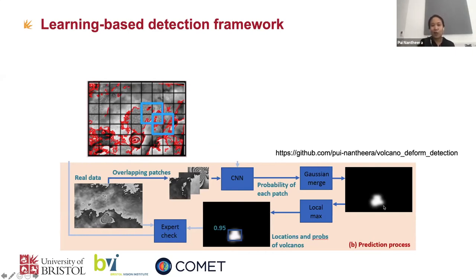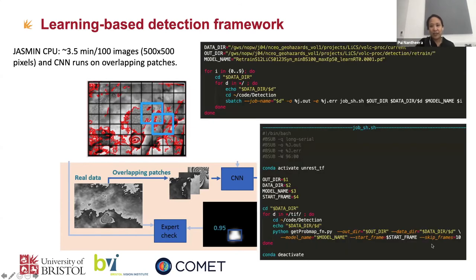I started developing the model in MATLAB, and after getting the model, I transferred it from MATLAB into Python and then ran that Python code on Jasmine. This shows the command I used to submit jobs to detect deformation across all 600,000 interferograms that we have right now.